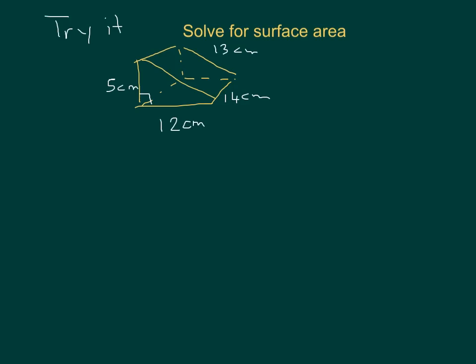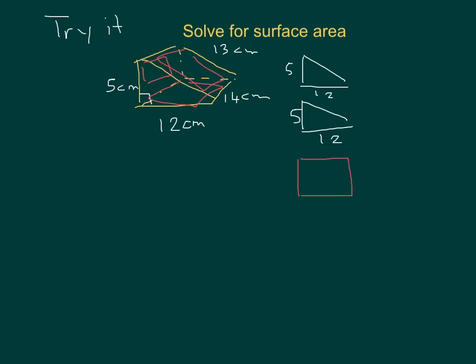Here's the next question — I've given you another triangular prism. Make sure you see how many sides it has. Pause the video and try it. Welcome back. The first thing I do is draw out the shapes: I have two triangles, base 12 and height 5, the same for both. Then I look at the other shapes — I have three rectangles. Here's one, here's another, and the one at the back. The first rectangle is 13 by 14.